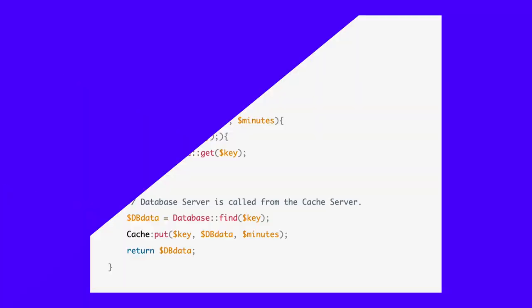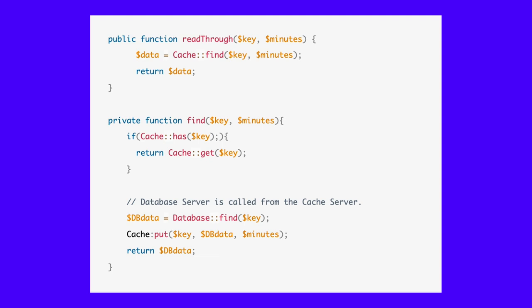The read-through strategy is the direct opposite of the cache-aside strategy. In this strategy, the cache server sits between the client request and the database server. Requests go directly to the cache server, and the cache server is responsible for retrieving the data from the database server if not found in the cache. You can implement this strategy with the Laravel cache with the following code. We've now discussed a few popular caching strategies for your next Laravel application. Remember, you can even use a custom caching strategy that best suits your project requirements.